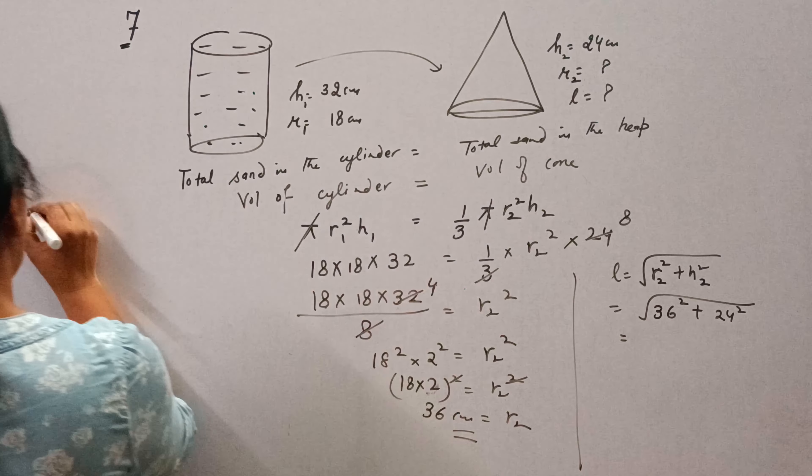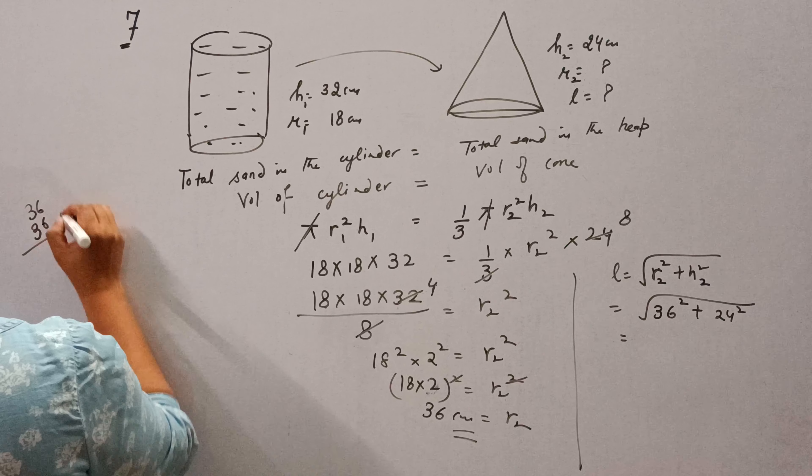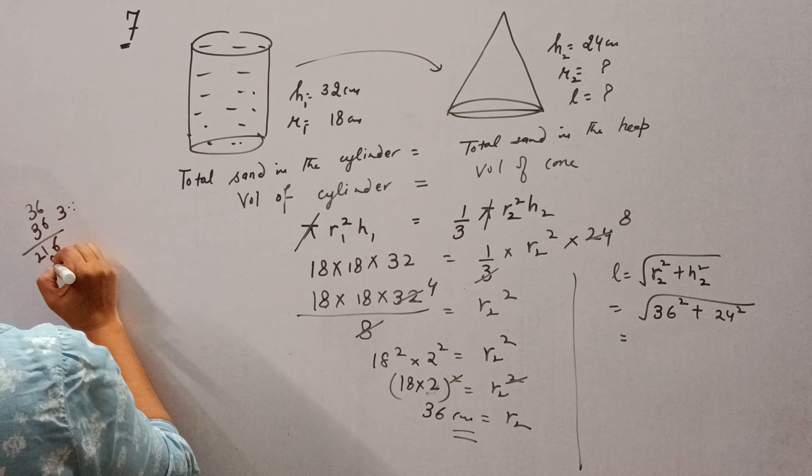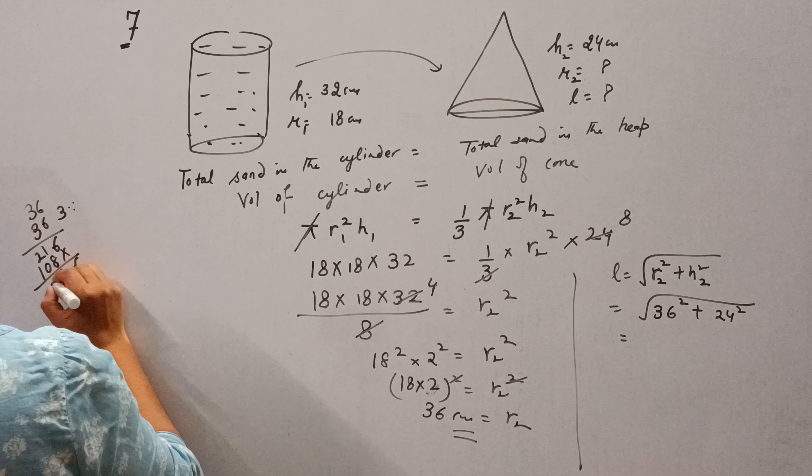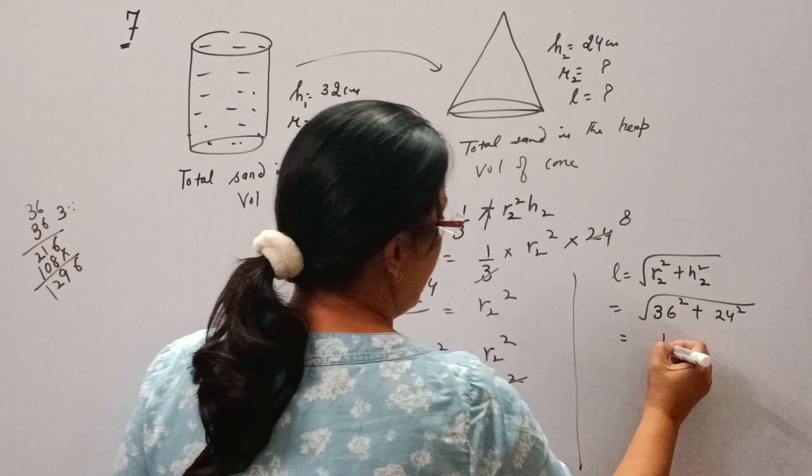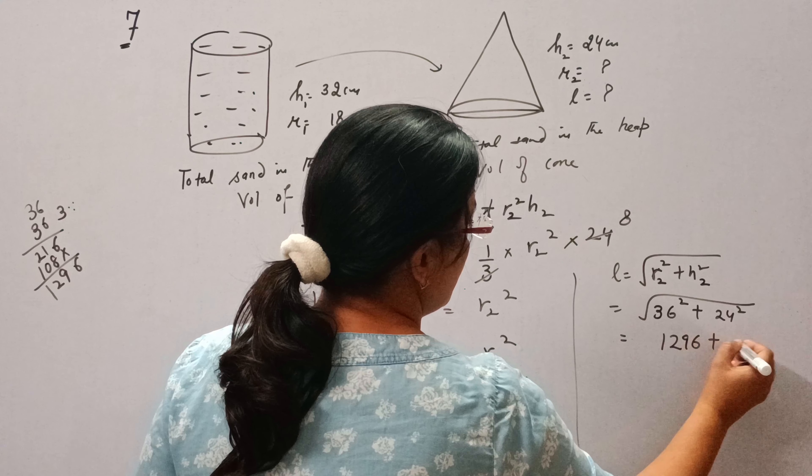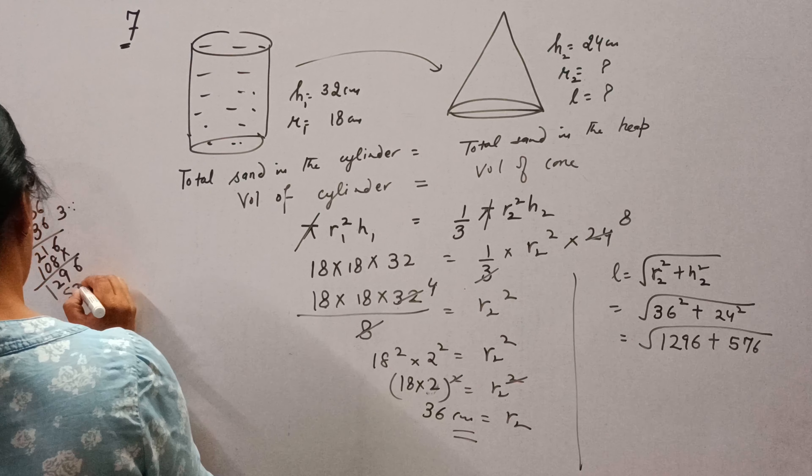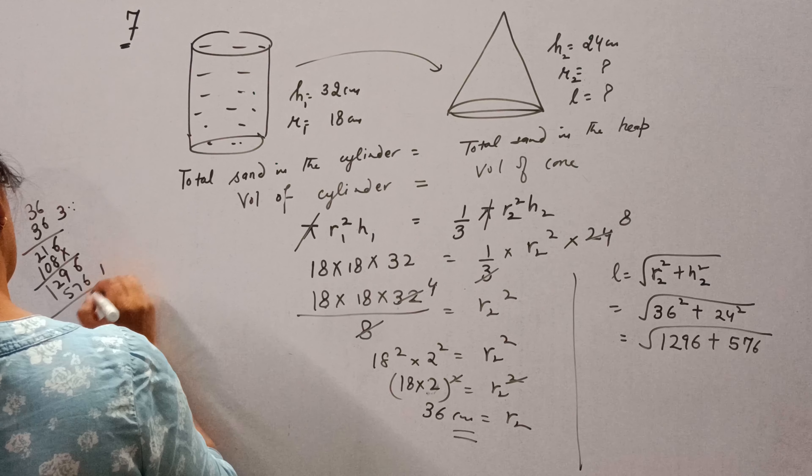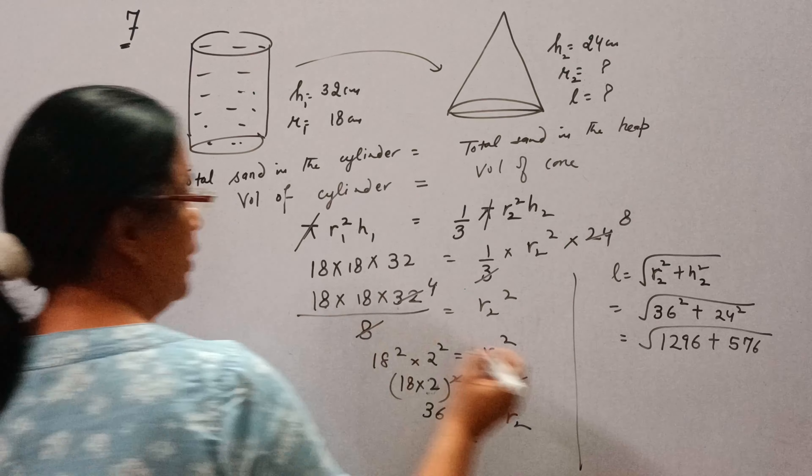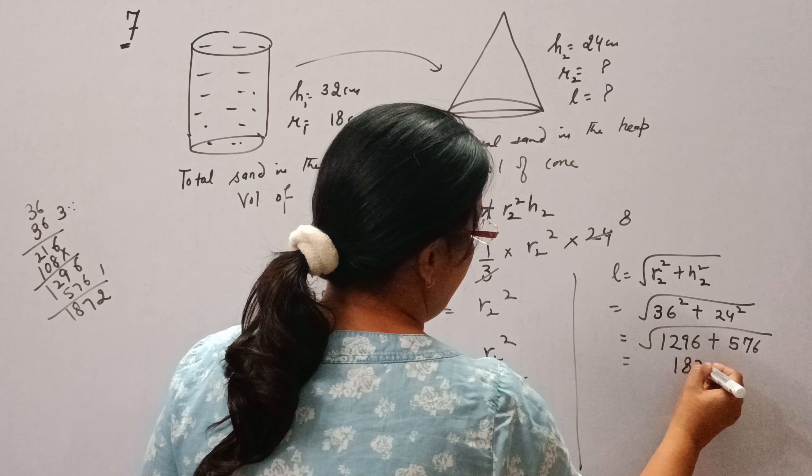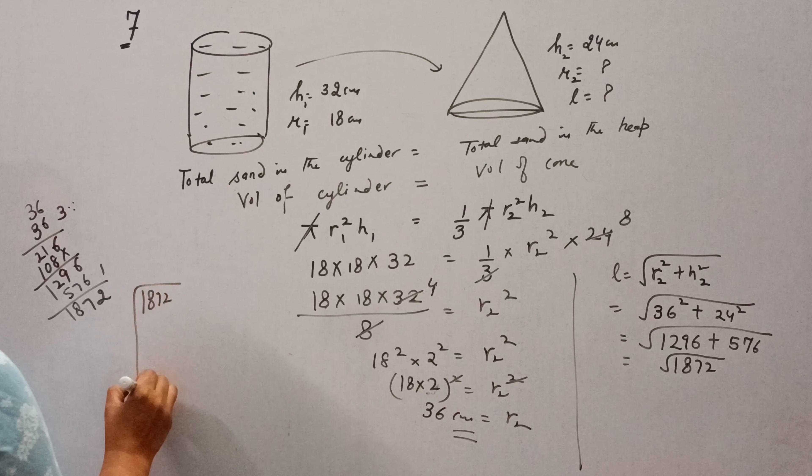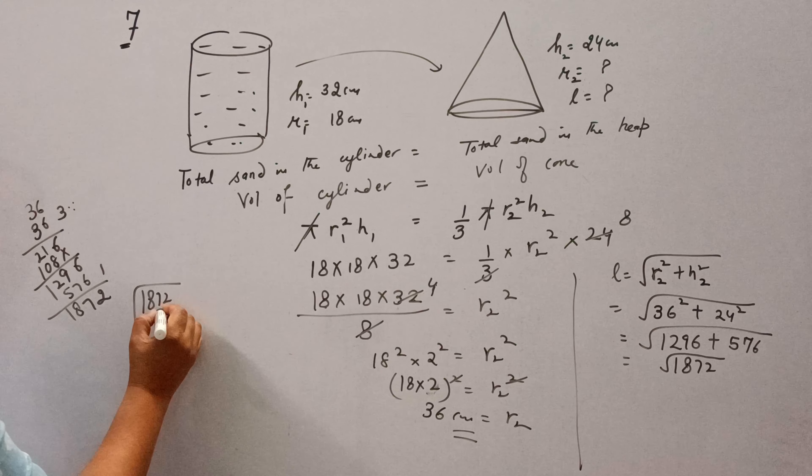Square of 36 is 1296. Square of 24 is 576. Add them: 1872.